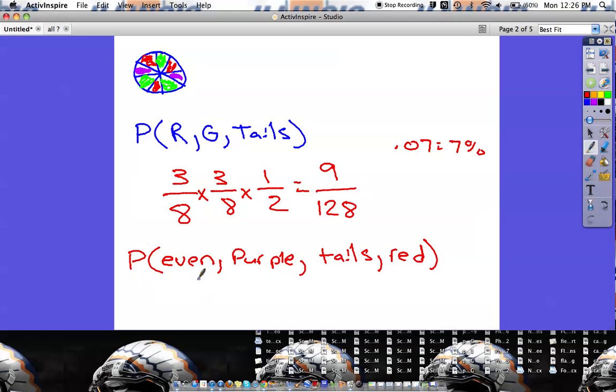So we've got four different things that we're going to do one after the next to see what the probability would be. Even number on a dice. On a dice there's six numbers, 2, 4, 6. That's three even numbers out of six numbers. So that's three-sixths, times purple. Looks like purple is only two of them, two out of eight. Tails on a coin would be one out of two. And then the last one is red on the wheel, which was three out of eight.